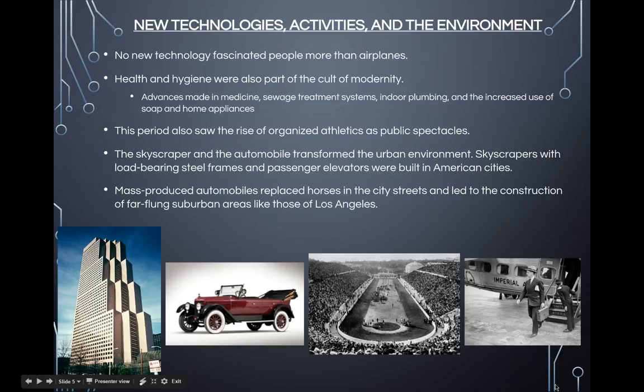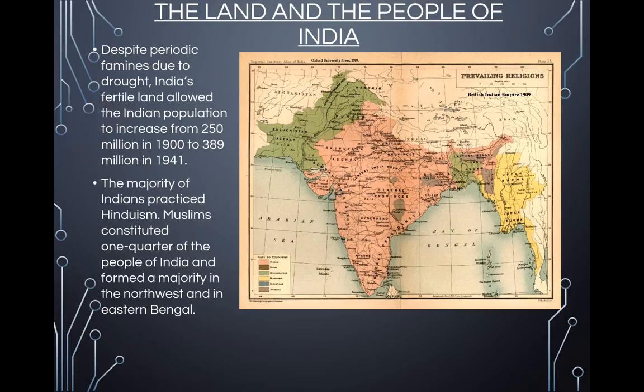Now we're going to switch gears completely and start talking about imperialism, beginning with India. Despite periodic famines due to drought, India's fertile land allowed the Indian population to increase from 250 million in 1900 to 389 million in 1941. Population growth brought environmental pressure, deforestation, and a declining amount of farmland per family. Indian society was divided into many classes: peasants, wealthy property owners, urban craftspeople, traders, and workers. The people of India spoke many different languages, and English became the common medium of communication of the Western-educated middle class.